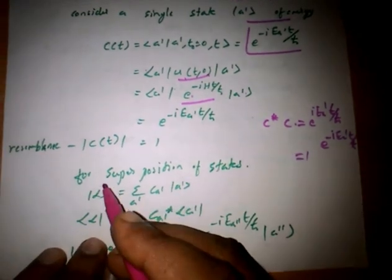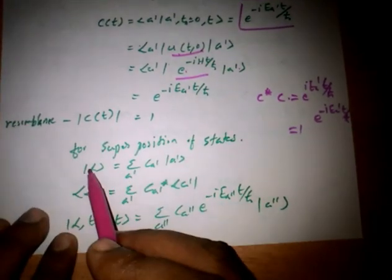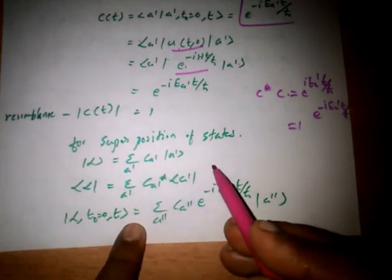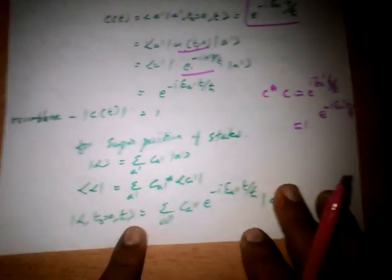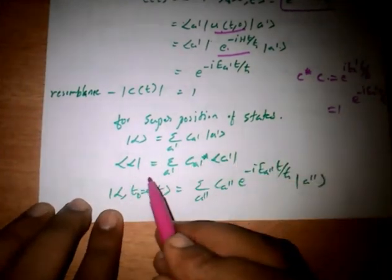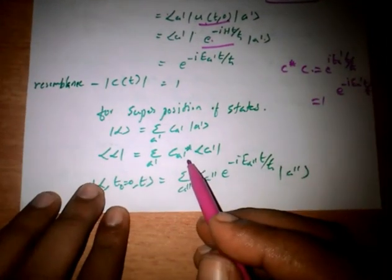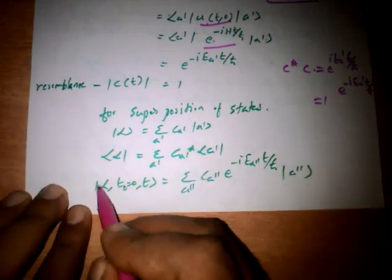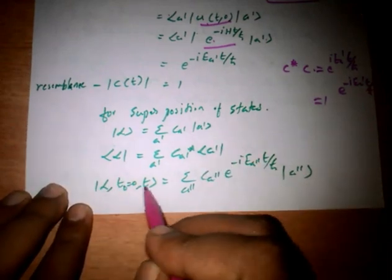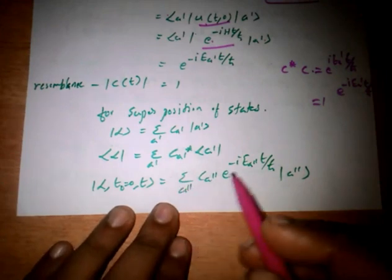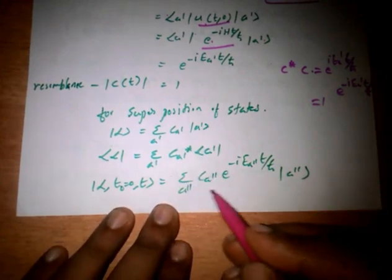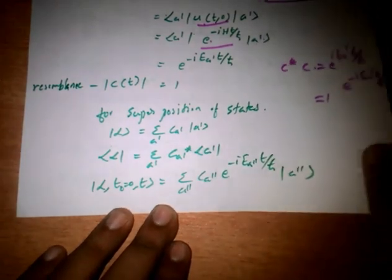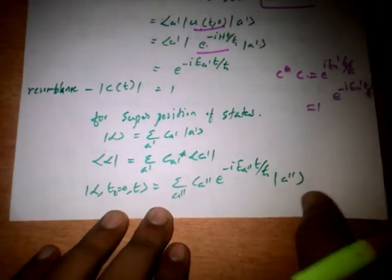Now we consider the superposition of states. That is, |α⟩ = Σ c_{a'} |a'⟩ + c_{a''} |a''⟩ + etc., and bra ⟨α| = Σ_{a'} c*_{a'} ⟨a'|. At later time, |α, t⟩ = Σ_{a''} c_{a''} e^(−iE_{a''}t/ℏ) |a''⟩.